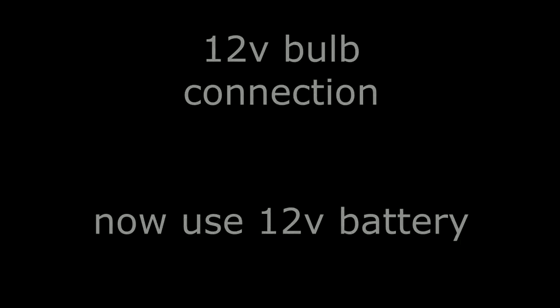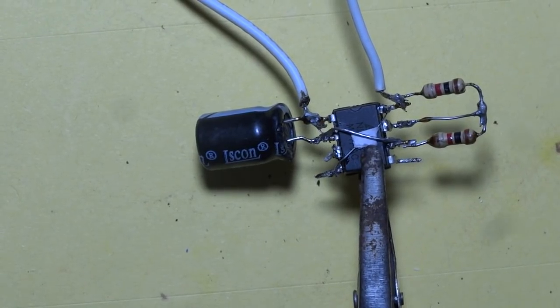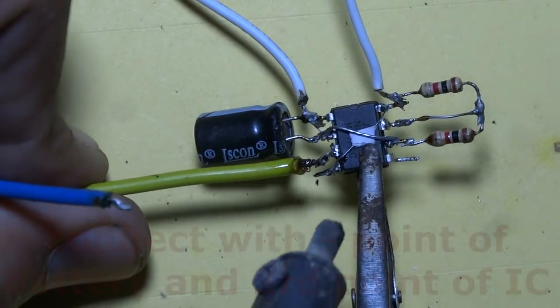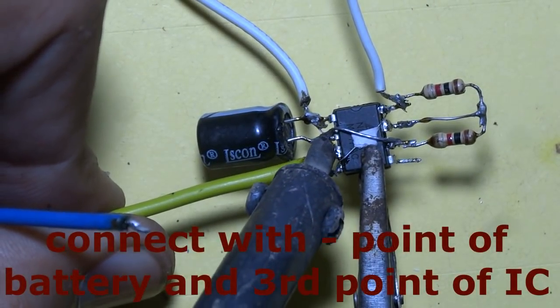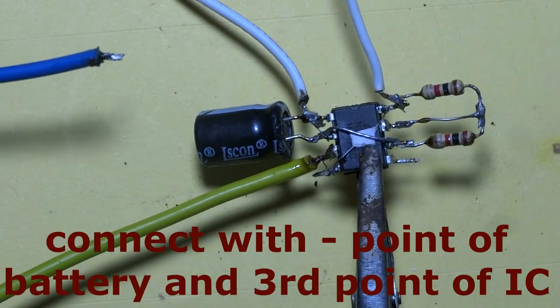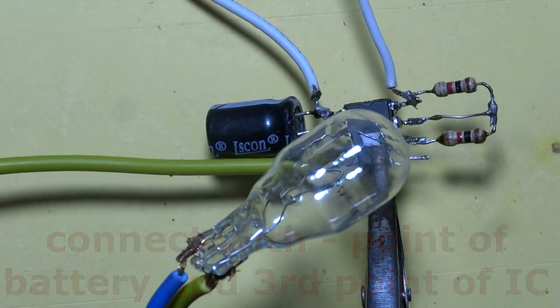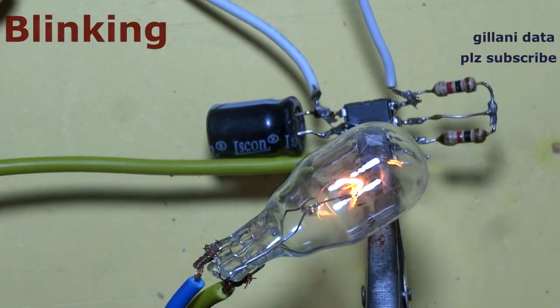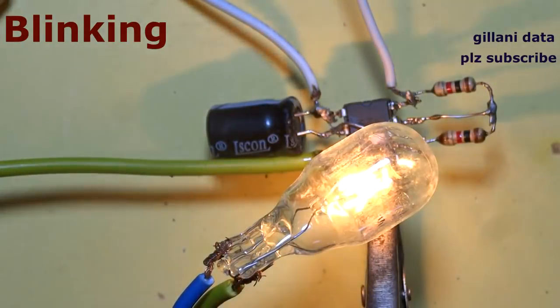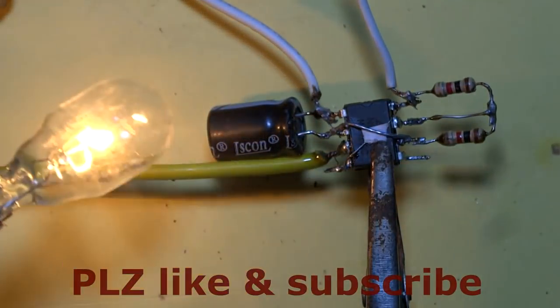Third experiment, we will connect a 12 volt bulb with this circuit. This is the third point of IC, also called output point of timer. Connect with negative point. Look, our bulb is blinking. Thank you so much for watching my video.